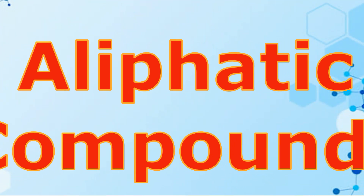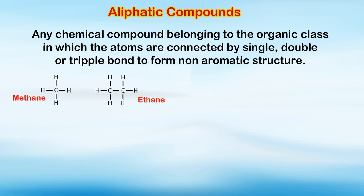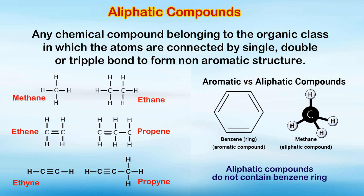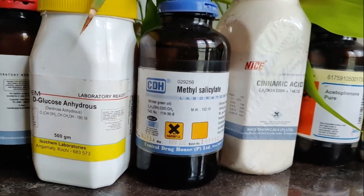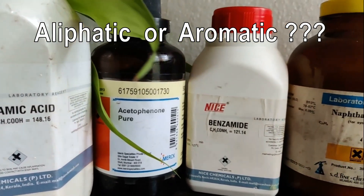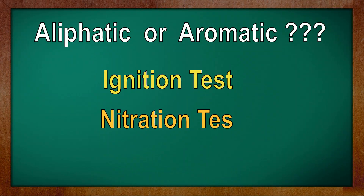An aliphatic compound means any chemical compound belonging to the organic class in which the atoms are connected by single, double, or triple bonds to form a non-aromatic structure. There are two tests to find out whether the given organic compound is aliphatic or aromatic: the ignition test and the nitration test.